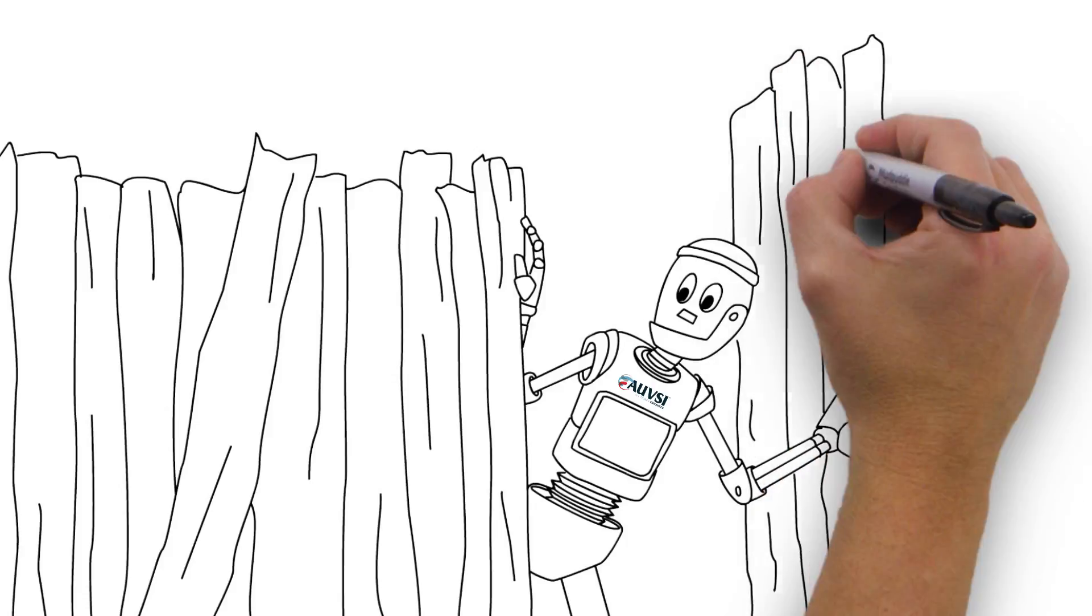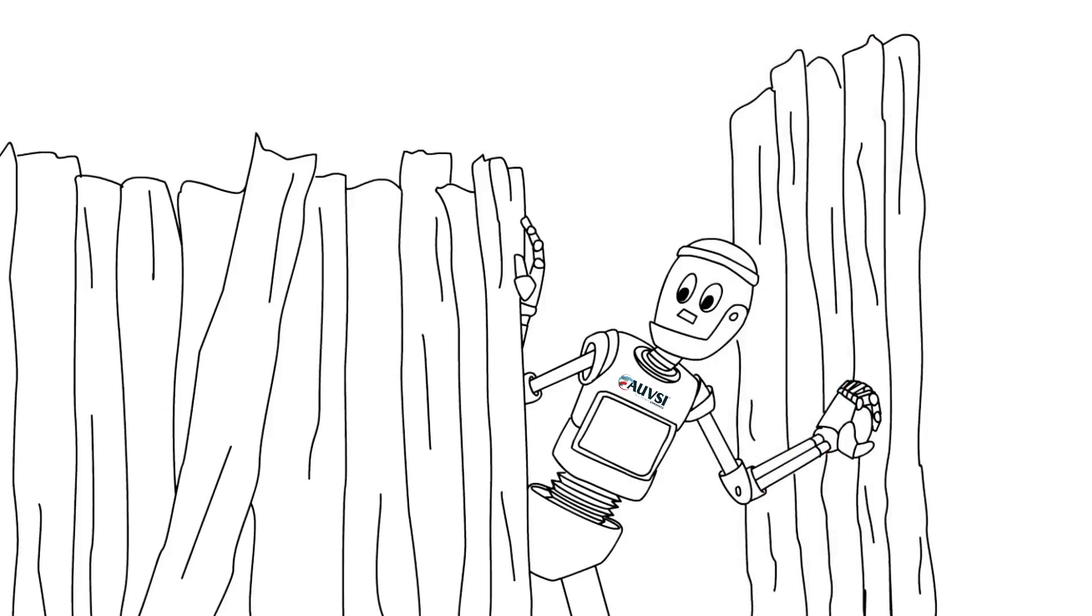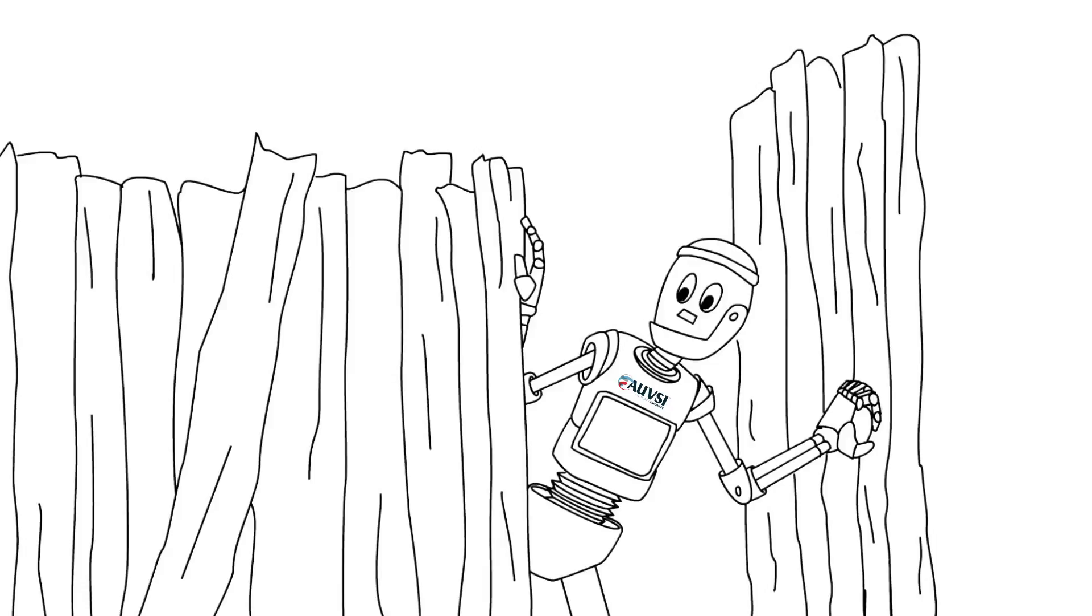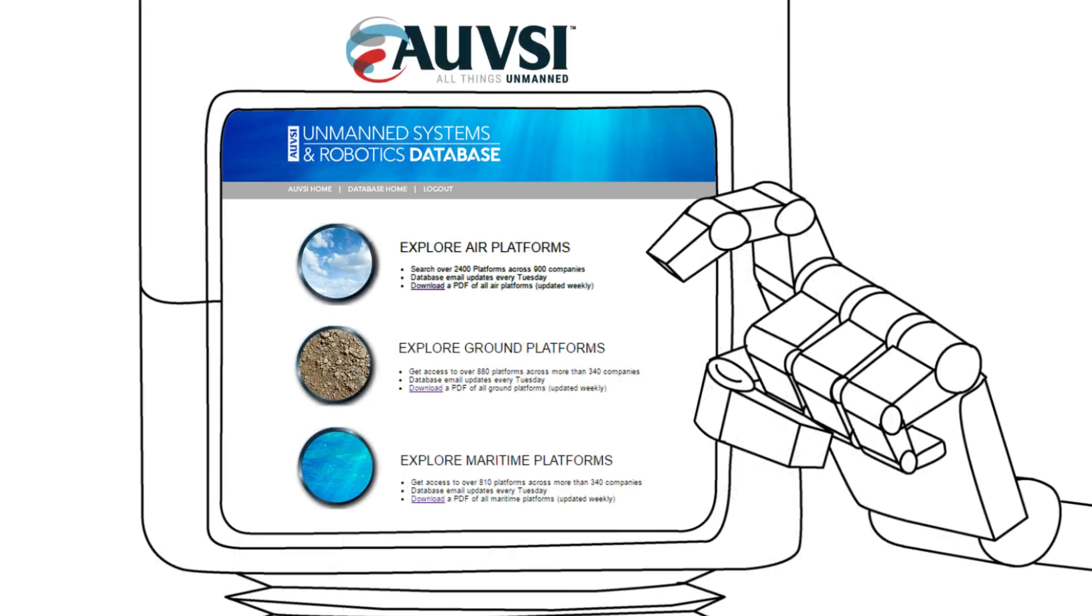AUVSI has created a comprehensive searchable database that opens the door to all unmanned vehicles and robotic products operating in the air, ground and maritime domains.